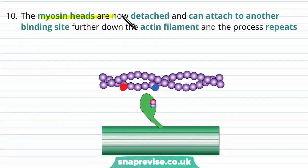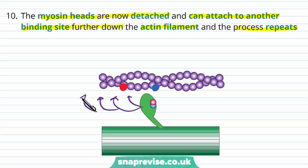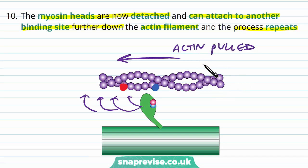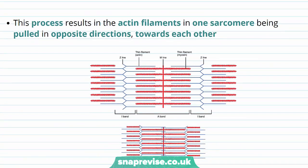When the myosin heads detach from the actin they attach to another binding site which is further down along the actin filament, and then the process repeats itself. You can imagine this head is clawing its way across the actin at many different sites along the sarcomere, and eventually the actin is going to get pulled in a particular direction. The actin molecules are all being pulled in the same direction across all the myofibrils in the whole muscle, and the process keeps repeating as long as calcium is released into the cell. The process results in the actin filaments of one sarcomere being pulled in opposite directions towards each other.